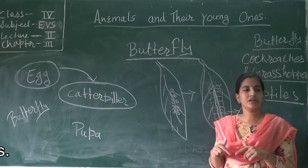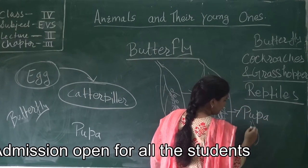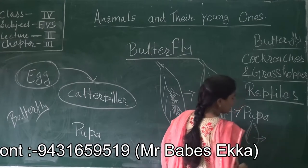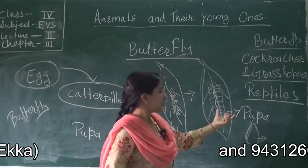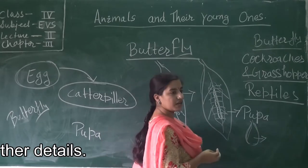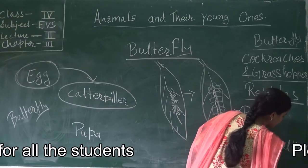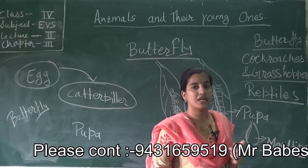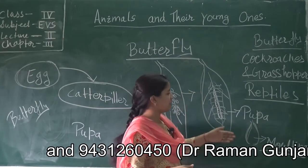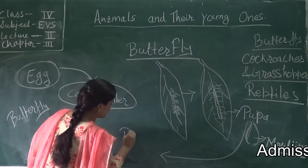After eating plenty of leaves, the pupa sheds its skin several times. This shedding of skin is known as molting. Molting is the process by which a pupa sheds its skin. After several changes of skin, the pupa becomes an adult butterfly.